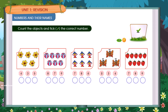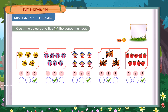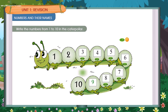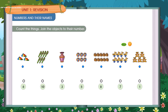Count the objects and tick the correct number. Write the numbers from 1 to 10 in the caterpillar. Count the things and join the objects to their number.